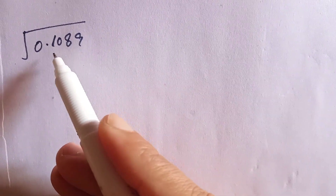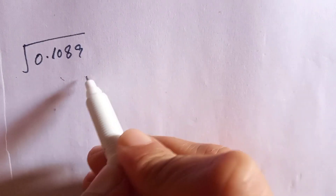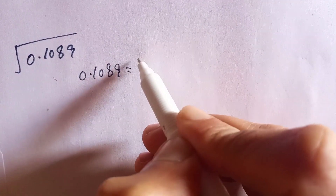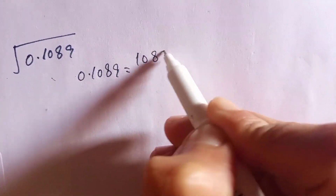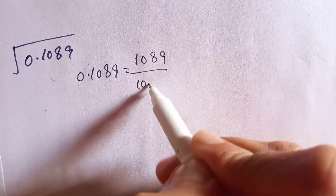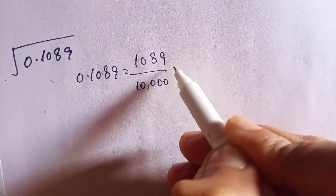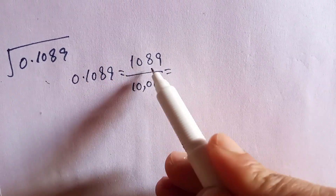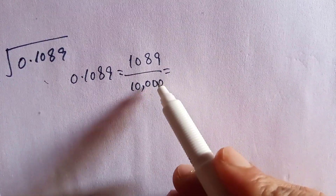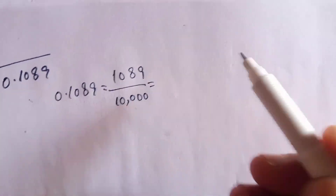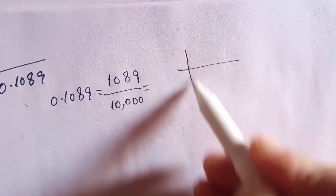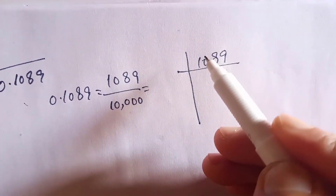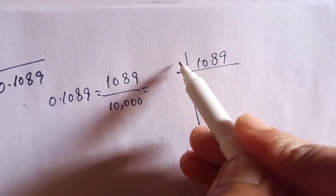Again it is very easy to find the square root of such a number. We can write 0.1089 as 1089 divided by 10,000. Now we will do the factorization of 1089 and 10,000 using the prime factorization method.